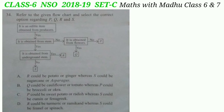Question 34: Refer to the given flowchart and select the correct option regarding P, Q, R, and S. It is an edible item obtained from producers. If yes, is it obtained from stem? If yes, is it obtained from underground stem? If no, is it obtained from flowers? If yes, it is Q; if no, it is P.